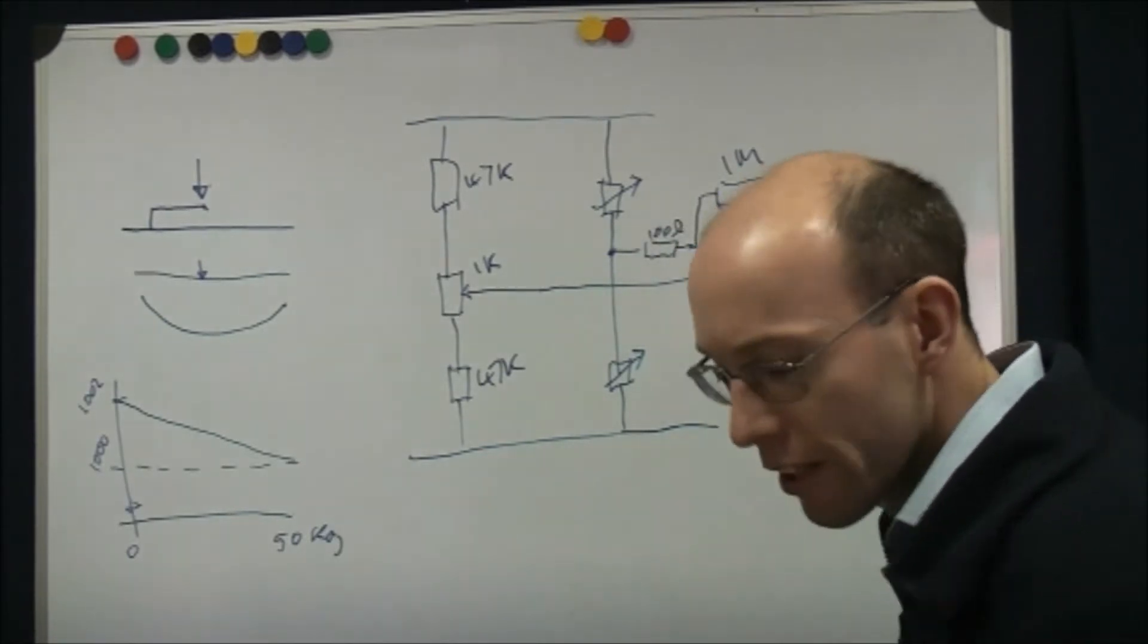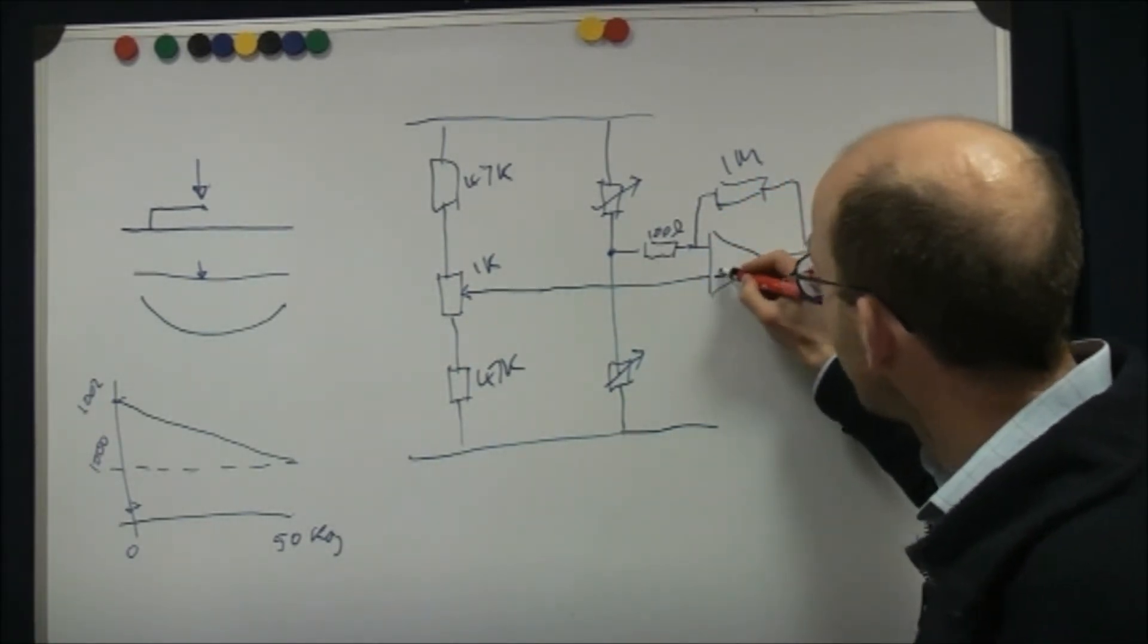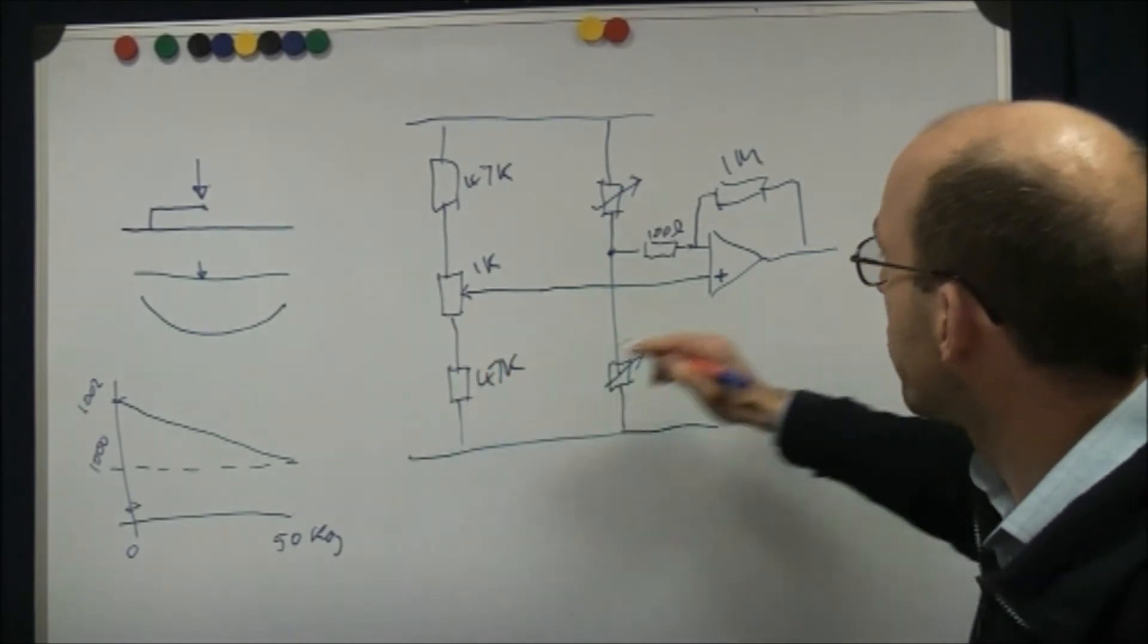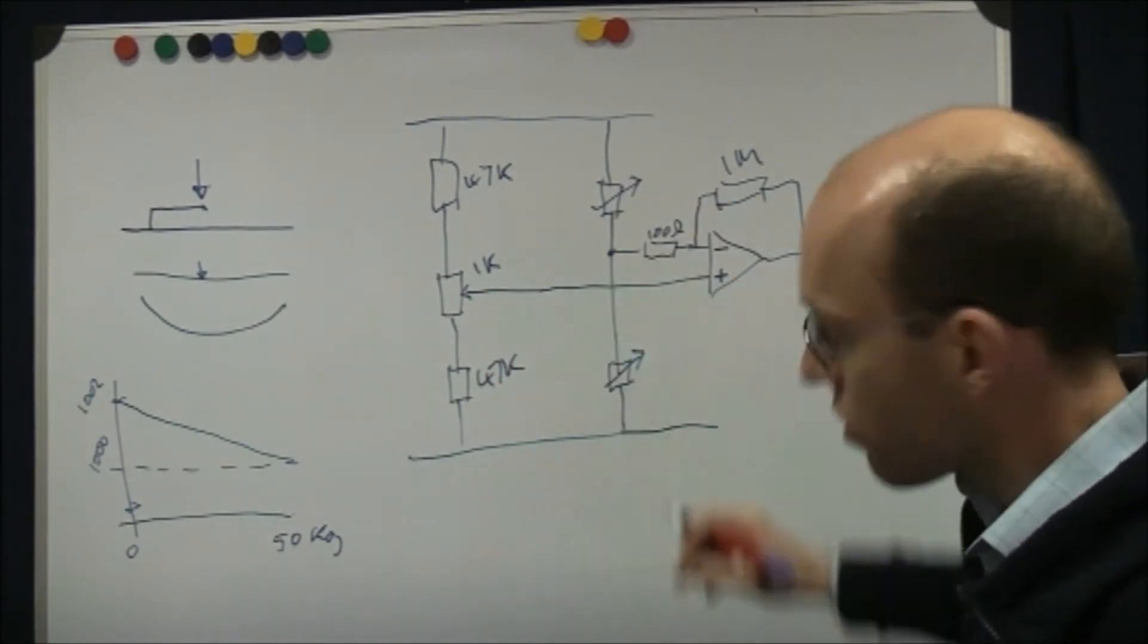And in terms of the way that one's connecting around, the non-inverting input there used with the trimmer pot and the inverting input to subtract off is the one that goes on the sensor.